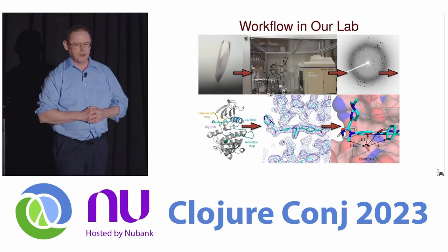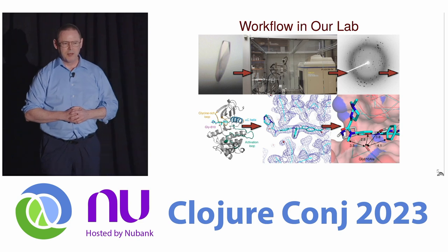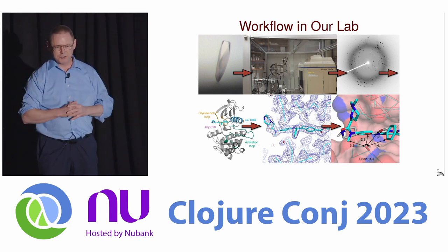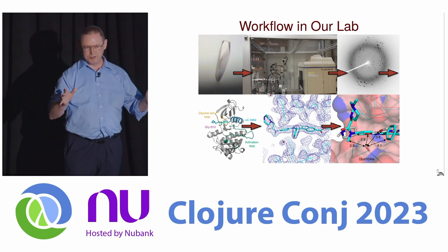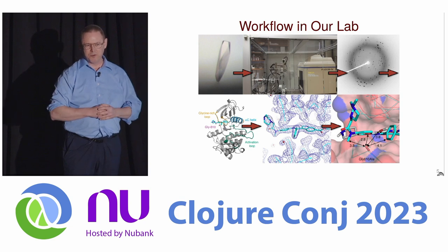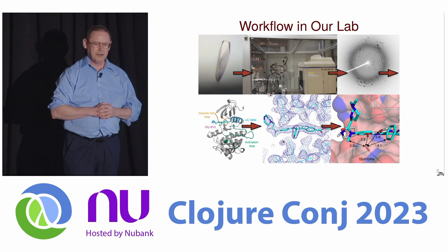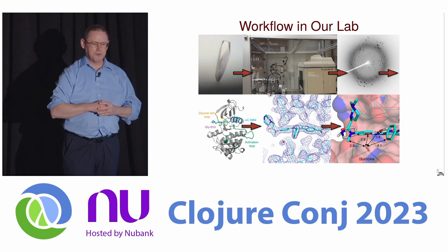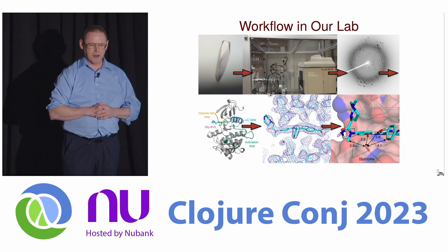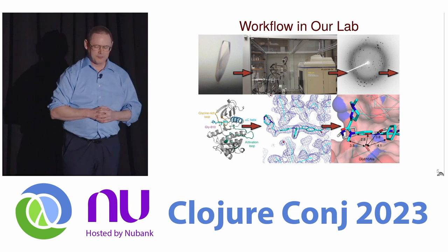Our goal was to find drug compounds that can displace the ATP and keep this protein inactive. This figure shows an outline of the workflow in our lab. In the upper left, we have a picture of a crystal. The weakness of protein crystallography is that you have to cajole 100 billion proteins to line up in an ordered array to form crystals. This crystal is only about six-tenths of a millimeter in its longest dimension and one-tenth of a millimeter in the narrow dimension.